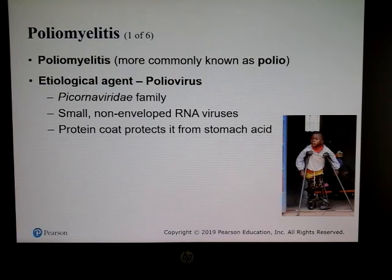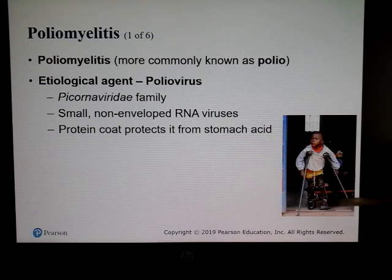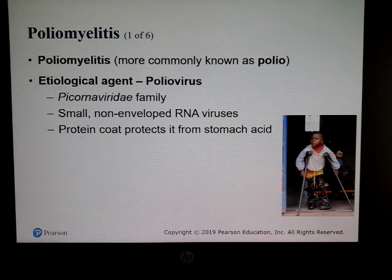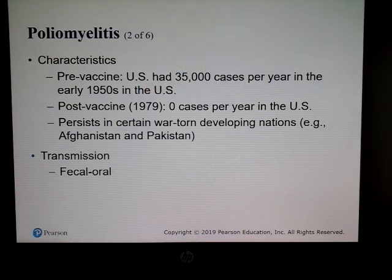An interesting viral infection that can affect our nervous system is polio, caused by the poliovirus. It can cause a type of paralysis, as illustrated by individuals requiring braces and crutches. The vaccine was developed because in the 1940s and 50s there were many polio cases worldwide. Pre-vaccine there were about 35,000 cases per year; post-vaccine, cases dropped to zero by 1979 — though polio is still seen in some parts of the world today.